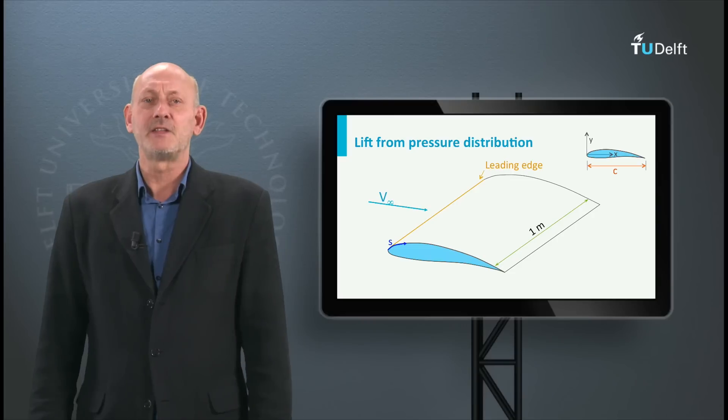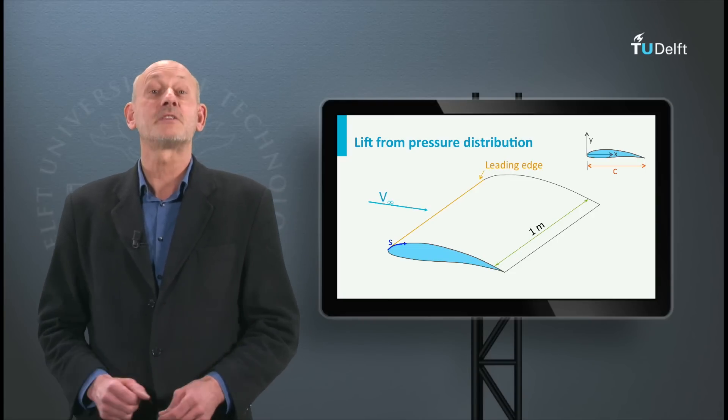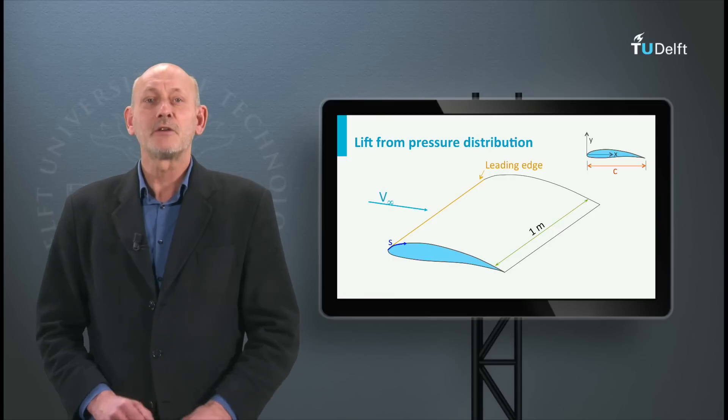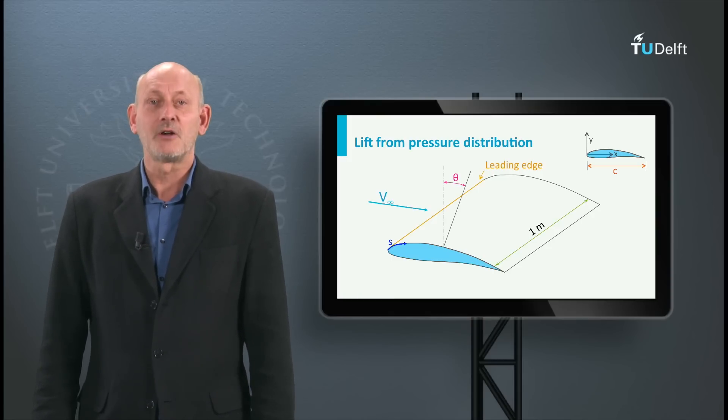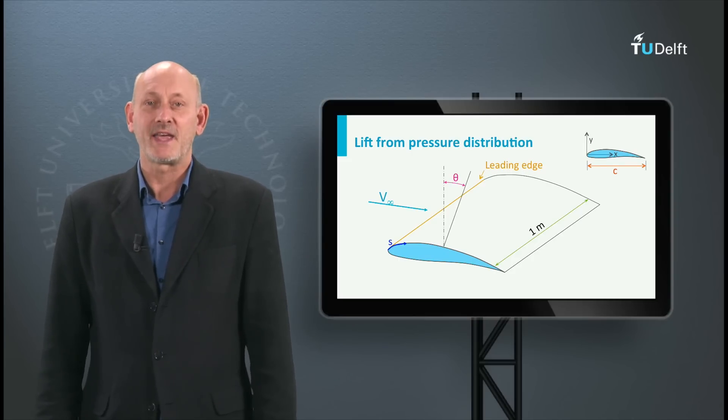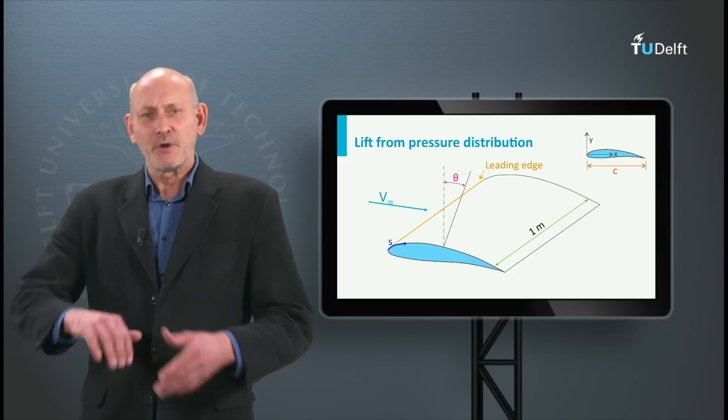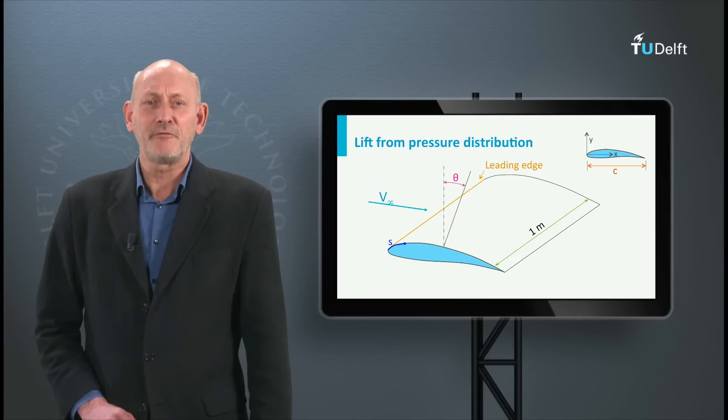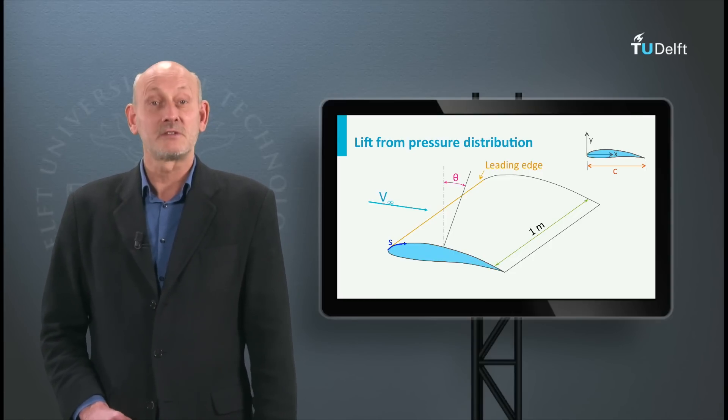An s-coordinate is defined along the contour of the airfoil starting from the origin. The angle theta is defined as the angle between a line normal to the contour at any point and the y-axis. So as we follow s along the contour of the airfoil, this angle theta constantly changes.